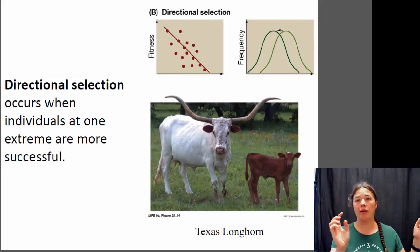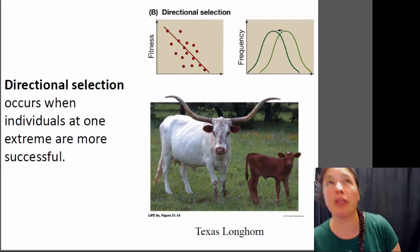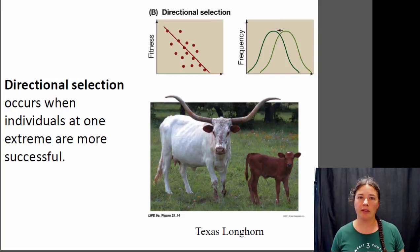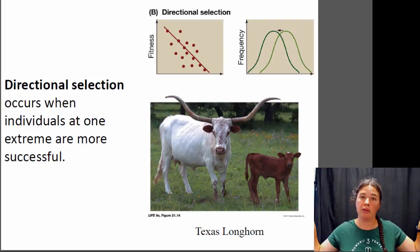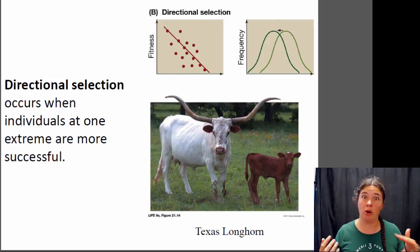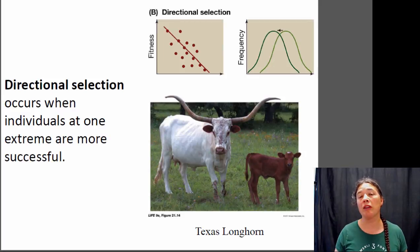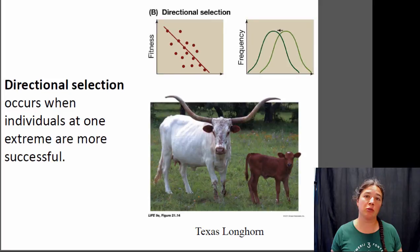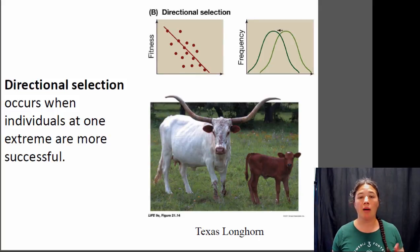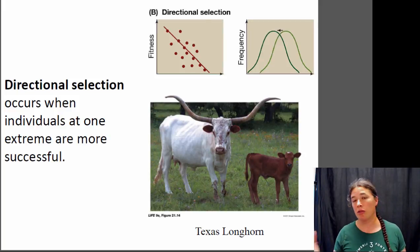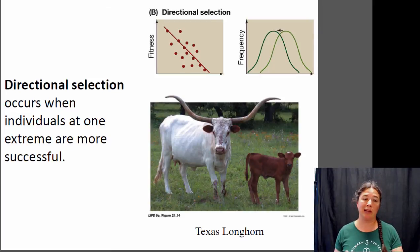Directional selection is when you have selection in one direction. One example is longhorn cattle, a breed that exists in the Southwest of the U.S. We think they evolved very long horns — in addition to probably some artificial selection by people who thought they looked cool — because having really long horns helped female cows defend their calves from predators like coyotes, wolves, and mountain lions once common in the Southwest. Female cows with longer horns were better able to protect their young and had higher fitness than females with shorter horns, leading to a gradual change over time towards these extremely long horns.